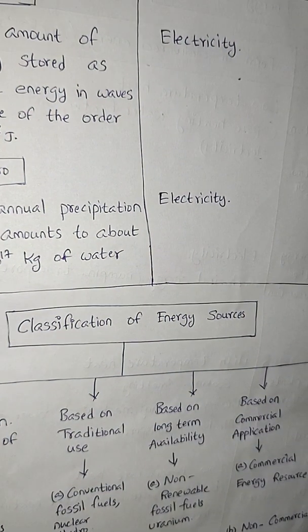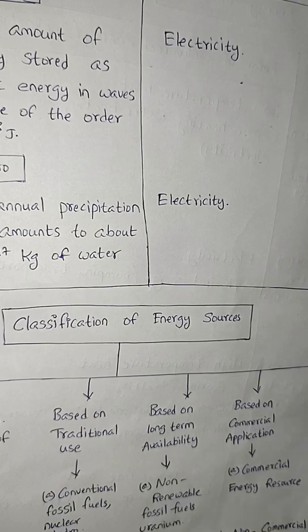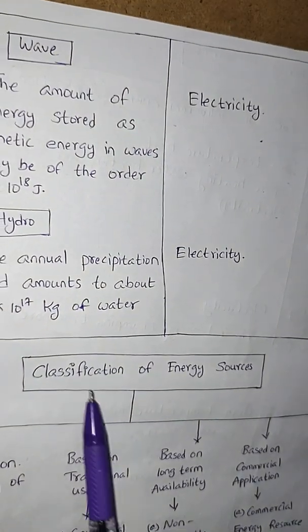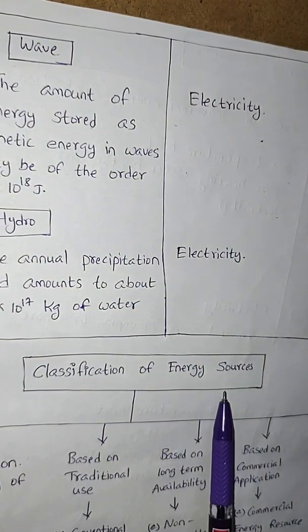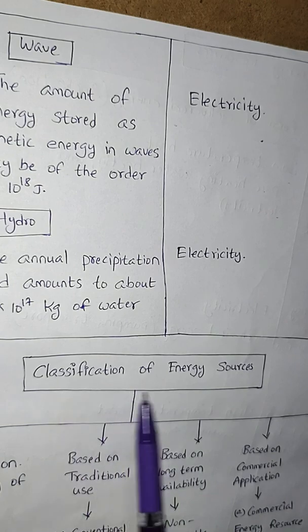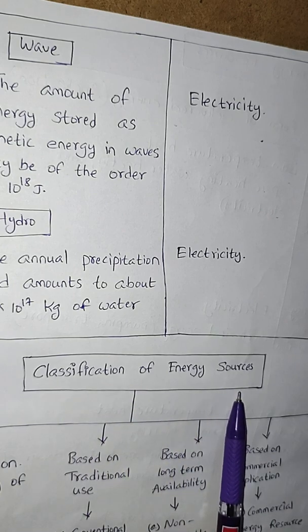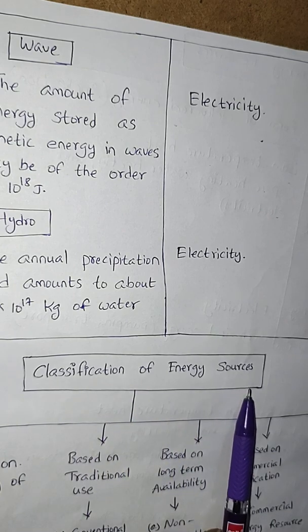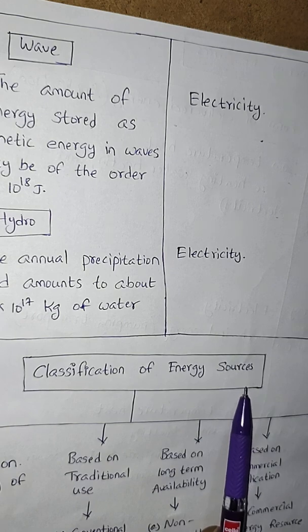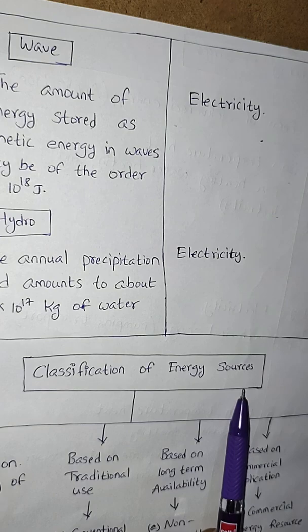Regarding renewable energy resources, if you get a question, you have to include all these points using this table so that you can score good marks in your upcoming semester examination. Next we will see the classification of energy sources — compulsorily you will get a question on this. We need to understand how energy sources are classified and the sub-classifications under each category.